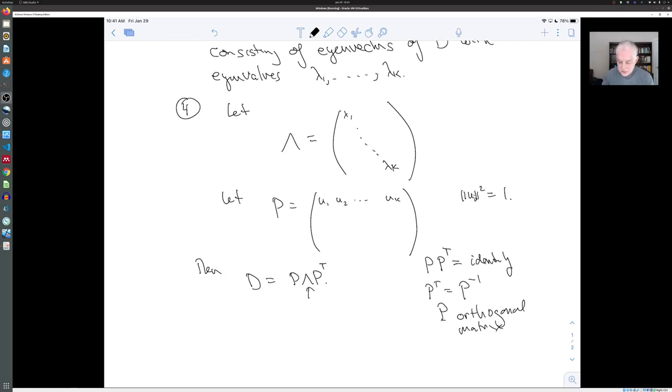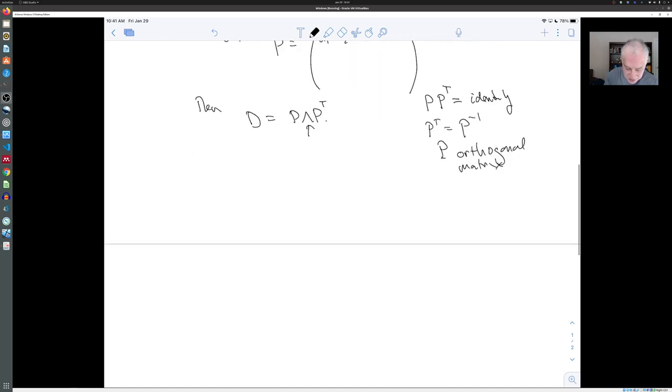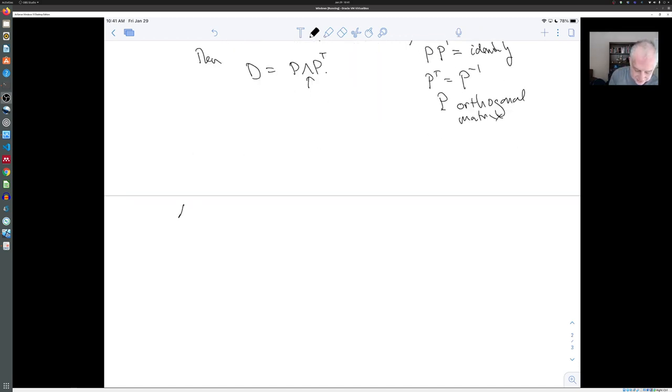Geometrically, that means P corresponds to a rigid rotation of k-dimensional space, and D is conjugate, or up to this P lambda P transpose, is a diagonal matrix given by the eigenvalues. Just to indicate why this is interesting, we can apply this to the covariance matrix.